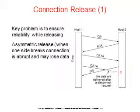A more sophisticated release protocol is needed to avoid data loss. Symmetric release allows a host to continue receiving data even after sending a disconnect segment. It works well when each process has a fixed amount of data to send and knows when it's done. Determining when all work is complete and the connection should be terminated is not always obvious. One can envision a protocol where host 1 says 'I'm done, are you done too?' and host 2 replies 'I am done too, goodbye.' Unfortunately, this protocol does not always work. There is a famous problem called the Two Army Problem that illustrates this issue.